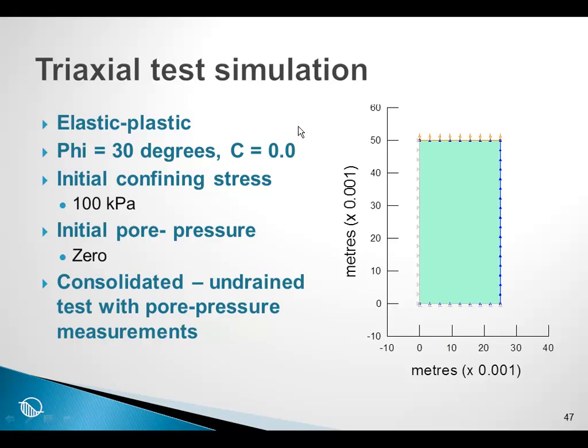So we're going to do a triaxial test simulation, assuming the soil behaves in an elastic-plastic manner. The friction angle is 30 degrees, but cohesion is zero. We're going to consolidate the sample to an initial confining stress of 100 kPa. And then there is zero excess pore pressure at the start in the sample. And then we are going to do a consolidated undrained test with pore pressure measurements.